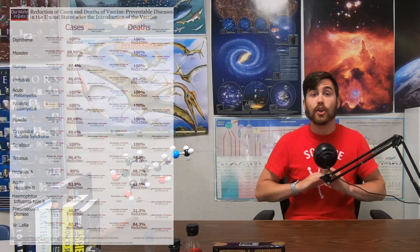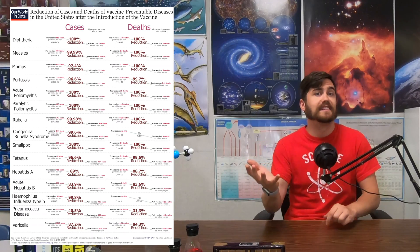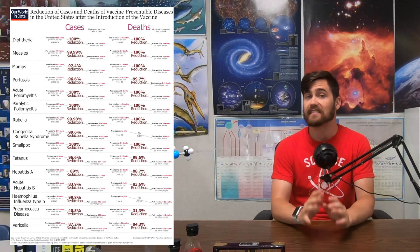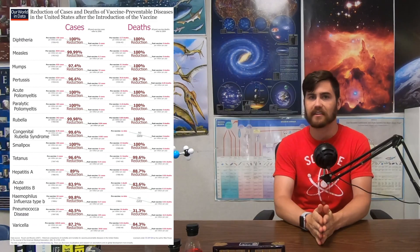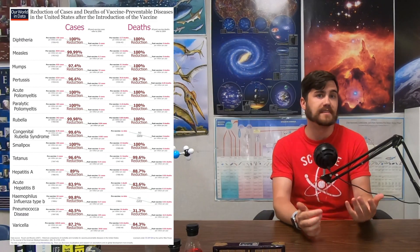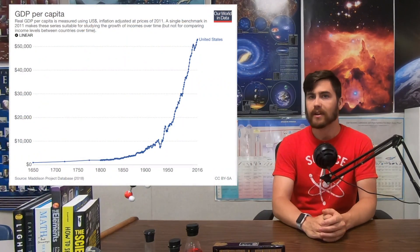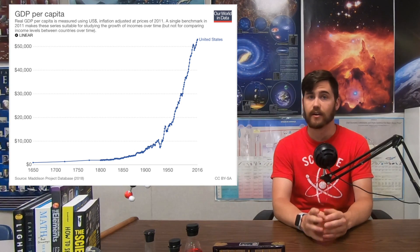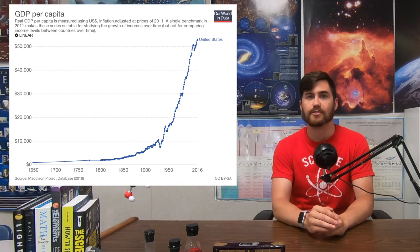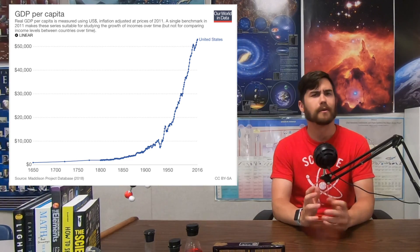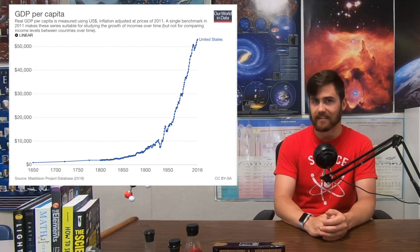The number of people killed by smallpox in the 20th century has been estimated at 300 million. But all of those deaths occurred between 1900 and 1977 because nobody on earth has died from smallpox since then. Vaccines made the most deadly virus on earth go extinct in a few decades. GDP per capita in the United States in 1900 was $6,822 in 2011 currency, whereas today it's over $53,000.